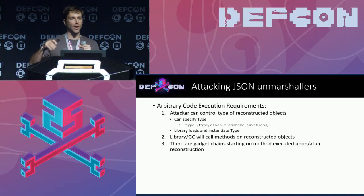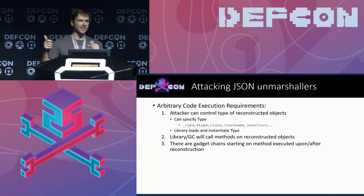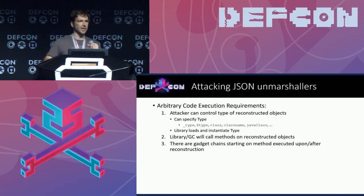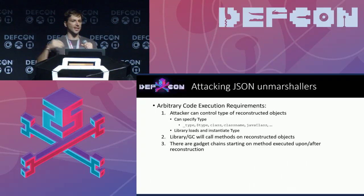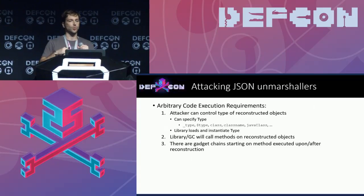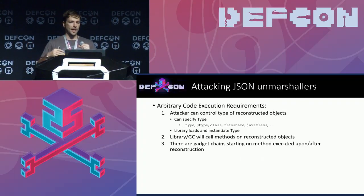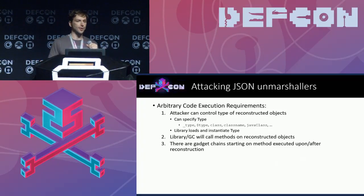We came up with simple high-level requirements for a library to be vulnerable. The attacker needs to control the type or class instantiated on the server — normally meaning the JSON contains an attribute like __type, $type, class, or className with a .NET or Java class name value. Then the library instantiates that type. The second requirement is the library must invoke some methods on the reconstructed object. The third requirement is the attacker must be able to assemble a remote code execution gadget chain starting from those invoked methods. Setters are normally invoked in most libraries, so the gadgets Alex presented can generally be used.